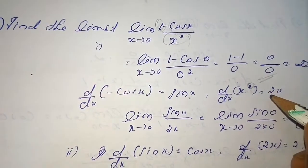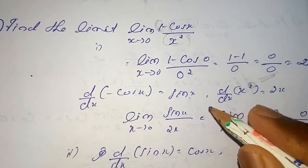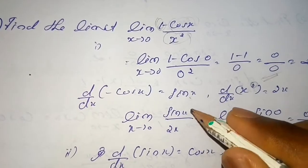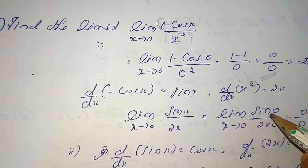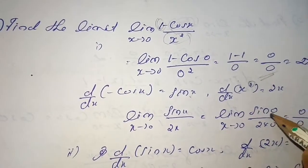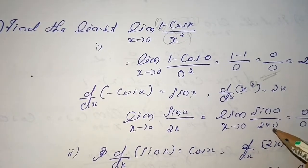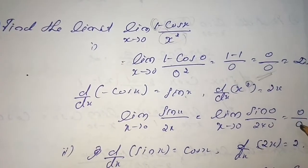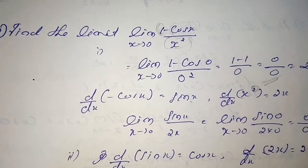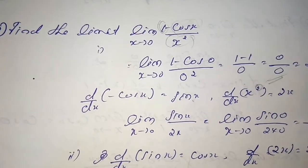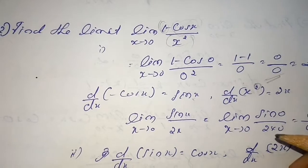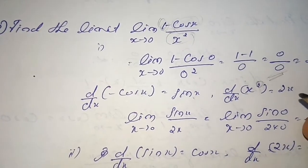We have to find the limit of f'(x)/g'(x), which is sin x/2x. This is sin 0/0, which is again 0/0, so we have to apply L'Hospital's rule one more time.